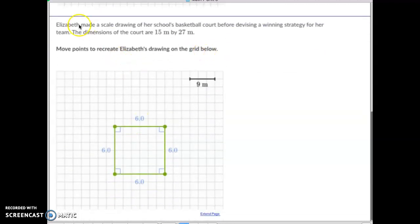Okay, so on this one, Elizabeth made a scale drawing of her school's basketball court to devise a winning strategy for the team. The dimensions of the court are 15 meters by 27 meters. Move the points on the grid below.